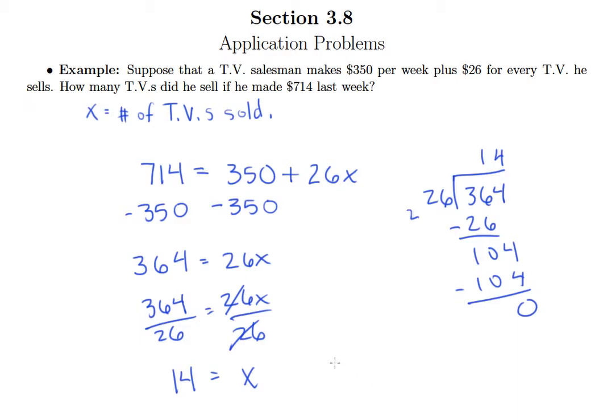So that means we get 14 for our X. So that must mean he sold 14 TVs.